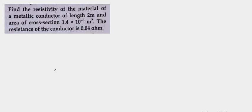Hello students, let's take up the next question. Find the resistivity of the material of a metallic conductor of length 2 meter and area of cross section 1.4 into 10 to the power minus 6 meter square. The resistance of the conductor is 0.04 ohm.